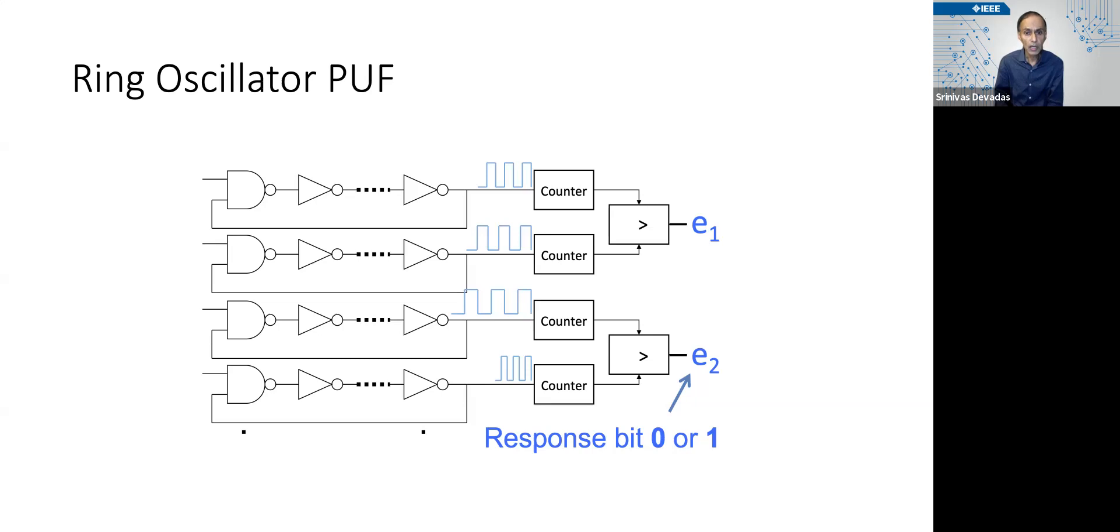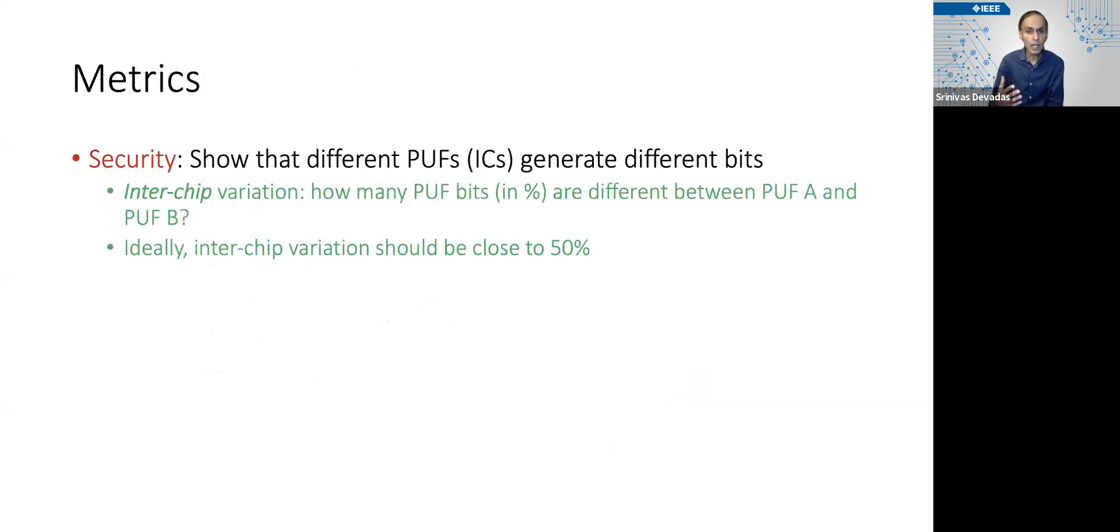When you do this, you end up getting variation of two different kinds. And the first variation is the variation we want, which is that these ring oscillators are going to oscillate with different frequencies.